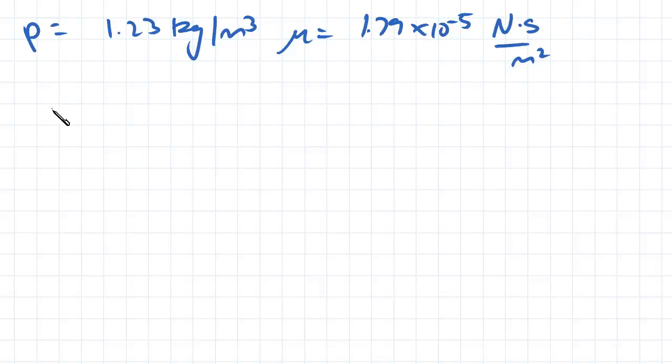So the Reynolds number is equal to the density multiplied by velocity multiplied by the diameter divided by our viscosity.